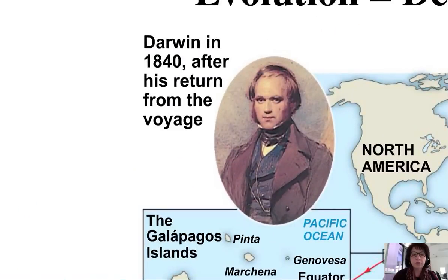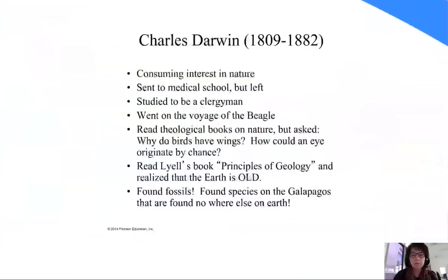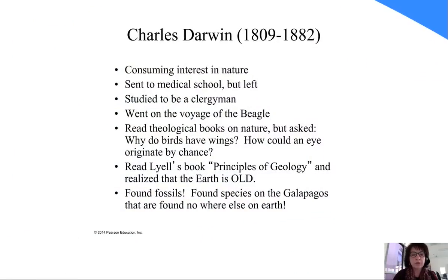Let's delve into Darwin's life. He is the scientist-naturalist credited with the first description of evolution and natural selection, though other people contributed to his understanding as well. A couple of facts: he was born and lived in the 1800s, so put yourself in that time frame. We should consider him a naturalist — he was consumed with nature.